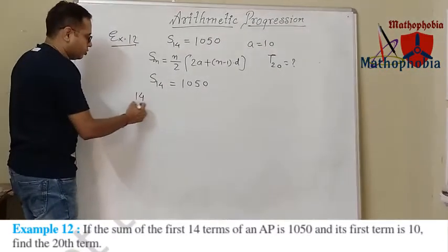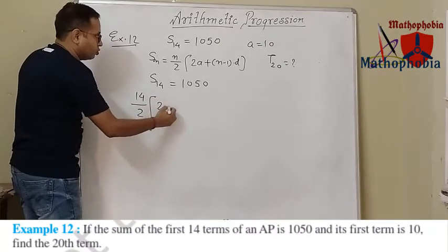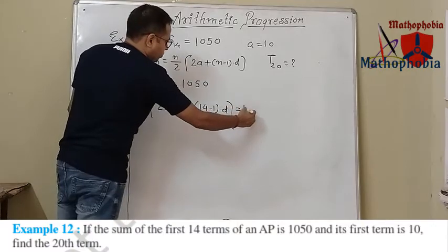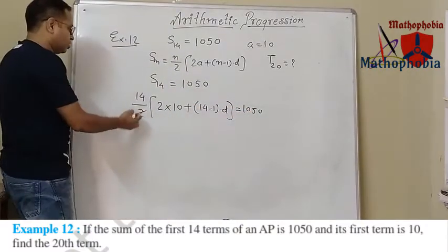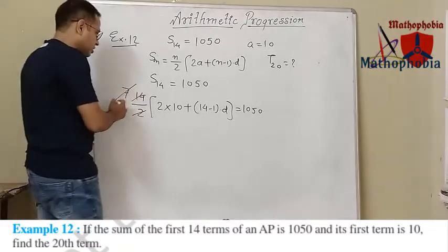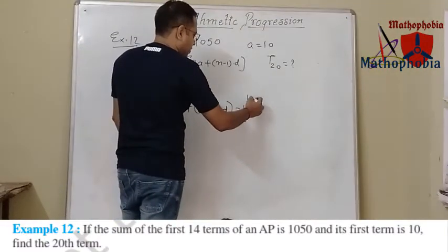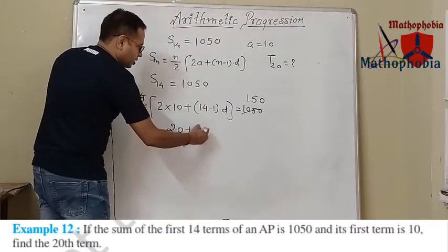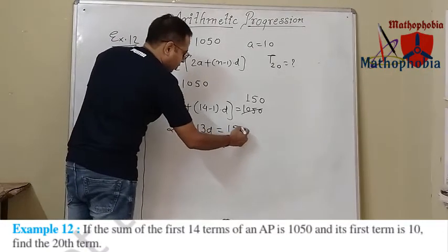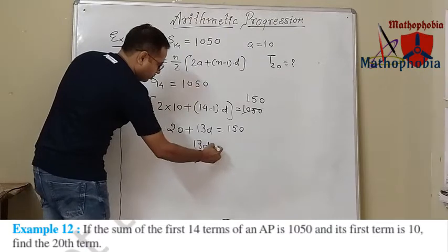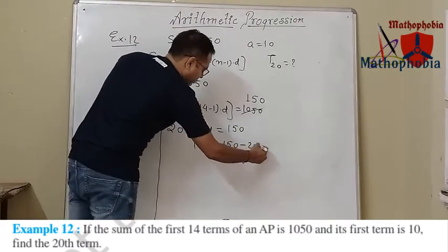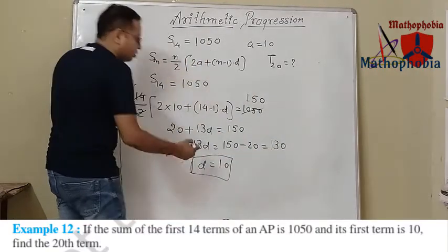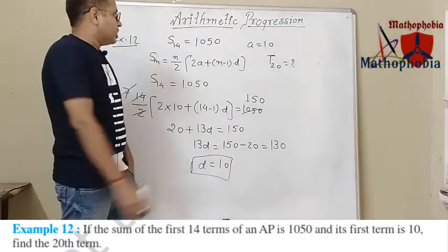So 14 divided by 2 is 7. We get 7 times 2a plus 13d equals 1050. Dividing both sides by 7 gives 2a plus 13d equals 150. Since the value of a is 10, we get 20 plus 13d equals 150, so 13d equals 130, therefore d equals 10. We have got the value of d equals 10, and the value of a is 10.